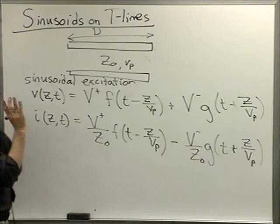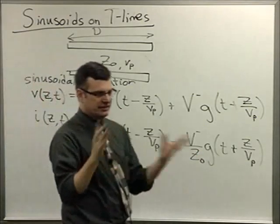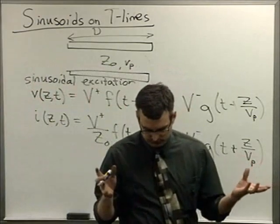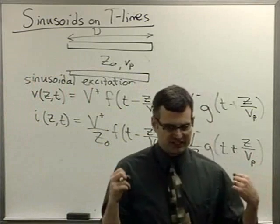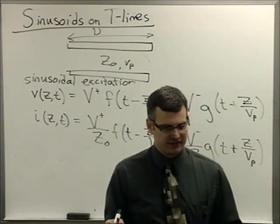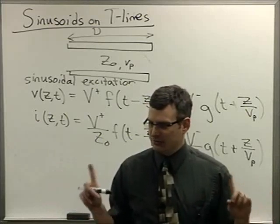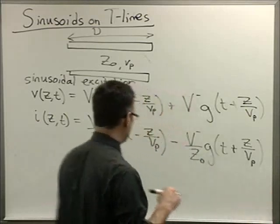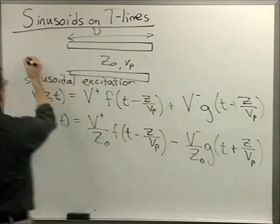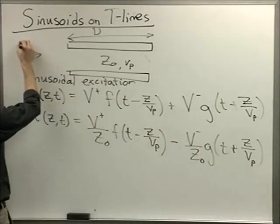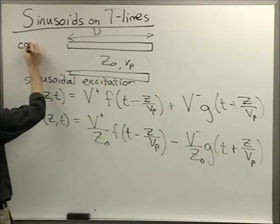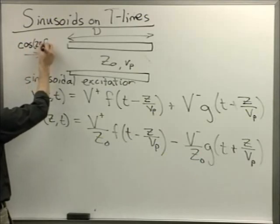Okay, so I just told you that if you have a linear system, if you're exciting something with a sine wave, then everything has to be sinusoidally shaped. The phase and the amplitude can change, but I can't get anything other than a sine wave.